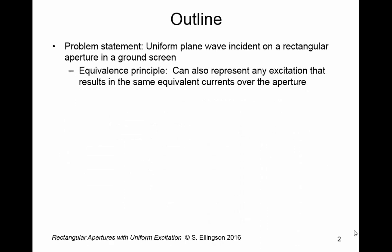First, the problem statement. What we'll talk about will be uniform plane waves incident on a rectangular aperture in a ground screen. At first glance, this doesn't seem too much like an antenna problem, although there certainly are a class of problems of interest of this type — plane waves approaching an opening in some otherwise impenetrable surface. The reason we are particularly interested in this case is because of the equivalence principle; this same problem can represent any excitation that results in the same equivalent currents over the aperture, and is closely related to a broad class of problems, including phased arrays and other things of great practical interest.